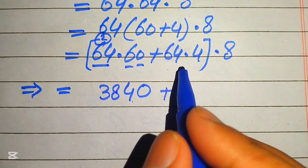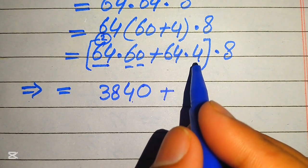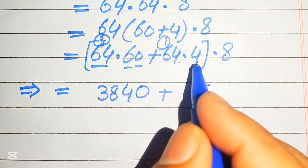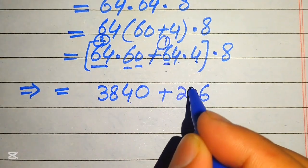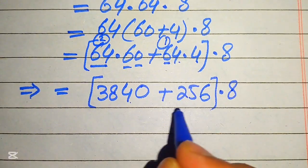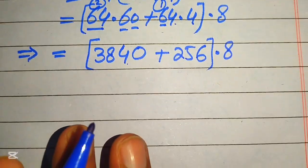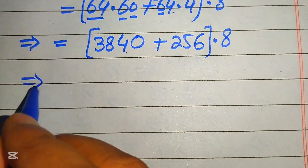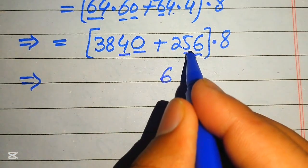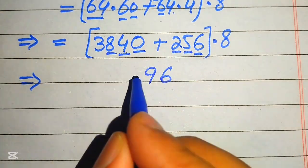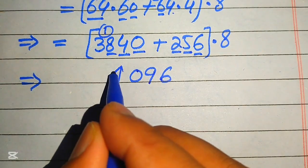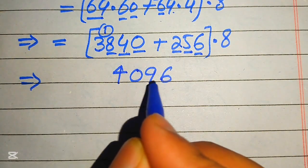Next, 64 times 4: 4 times 4 is 16 — write 6, carry 1. 6 times 4 is 24, plus 1 is 25. So 64 times 4 equals 256. Adding 3840 plus 256: 0 plus 6 is 6, 4 plus 5 is 9, 8 plus 2 is 10 — write 0 carry 1, 3 plus 1 is 4. Total is 4096.